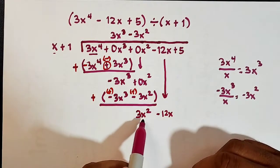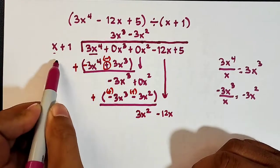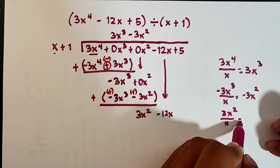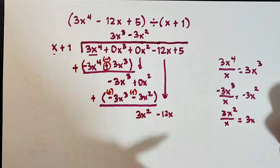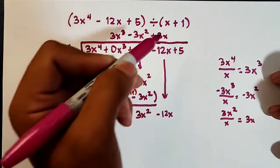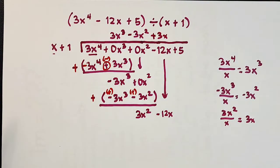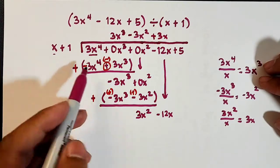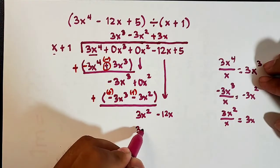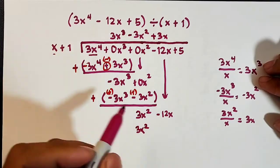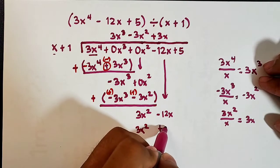The new leading term is 3x squared divided by x, which is simply 3x. We put it here as plus 3x. Now multiply: 3x times x is 3x squared; 3x times 1 is plus 3x.